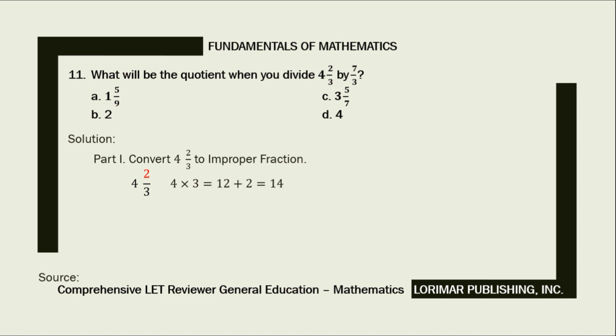2 plus 12 equals 14. Next, place the sum, 14, over the original denominator, 3. So 4 and 2/3 becomes 14/3.